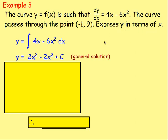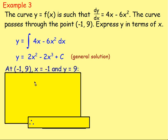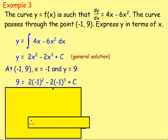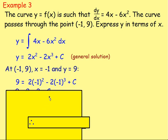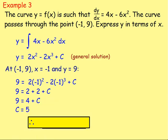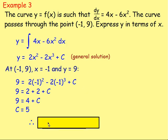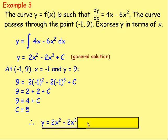We are given more information — the curve passes through the point (-1, 9), so x is -1 and y is 9. Sub them in: 9 equals 2 times (-1) squared, take away 2 times (-1) cubed, plus c. Simplify that and you end up with c equals 5. For the particular solution, rewrite the general solution replacing c with 5: y equals 2x squared minus 2x cubed plus 5.